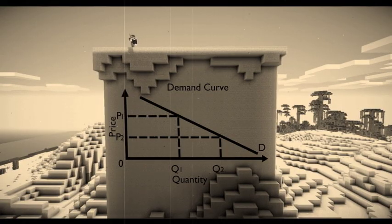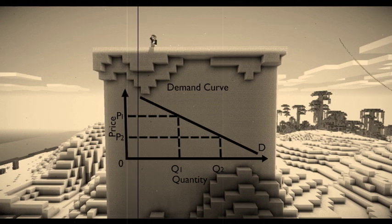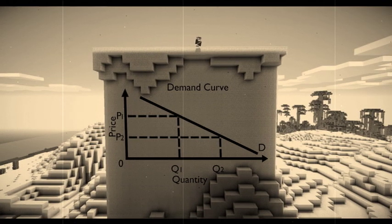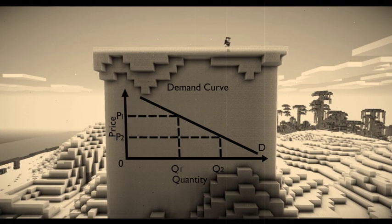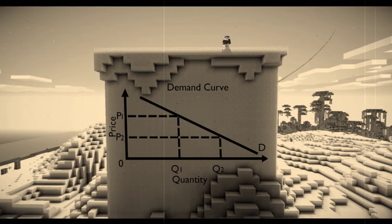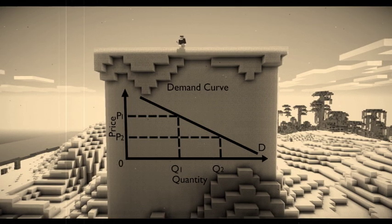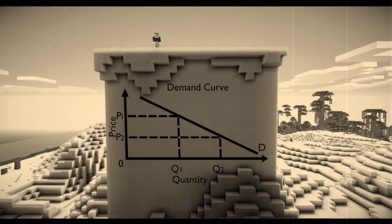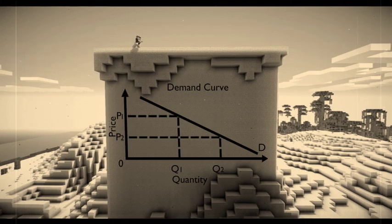This is the demand curve. The y-axis is the price and the x-axis is quantity. The curve is downward sloping because, according to the law of demand, there is an inverse relationship between the quantity of a good demanded over a particular time period and its price. As the price of the good increases, the quantity of the good demanded falls. As the price falls, the quantity demanded increases — all other things equal.